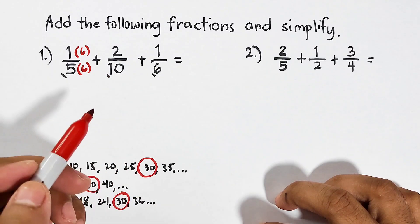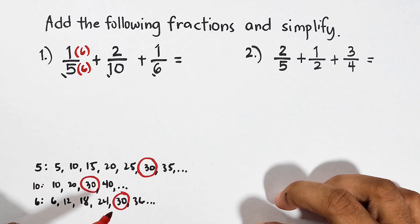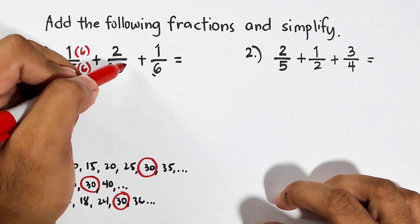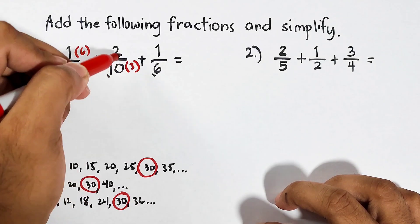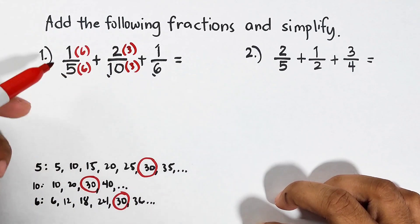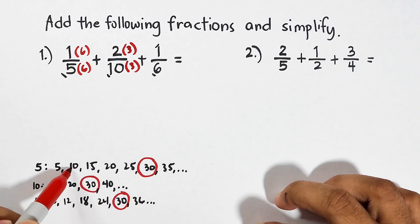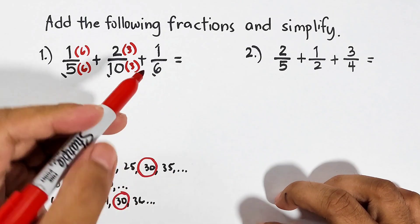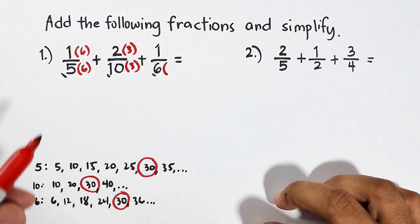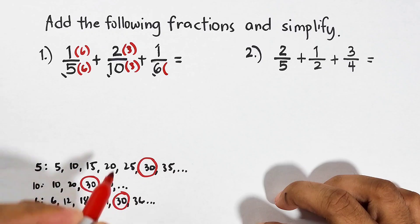What about 10? What do you think is the number that we need to multiply to make it 30? Let's count: 1, 2, 3. So you will multiply this by 3 and also this by 3. Same pattern, guys. For 6 to make it 30, you will multiply it by 5.